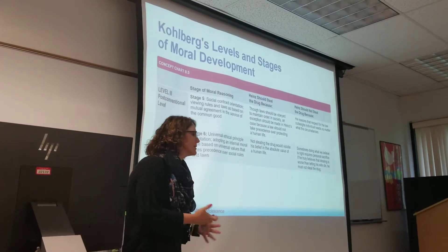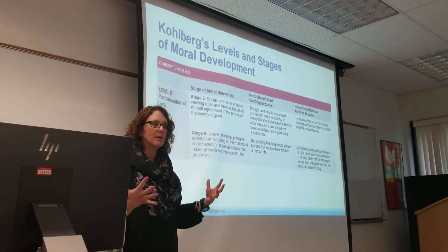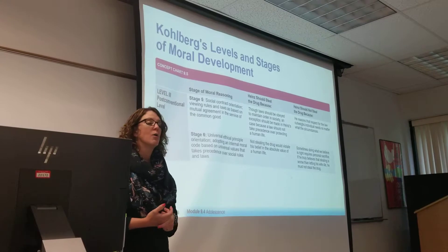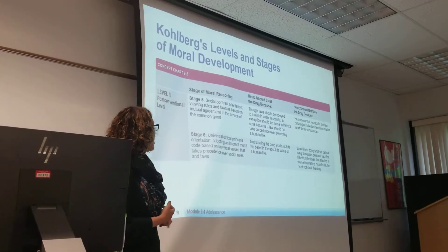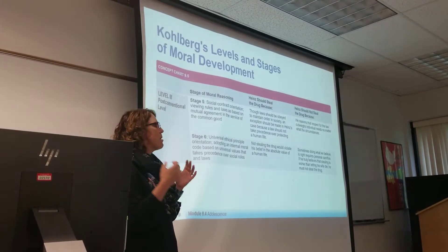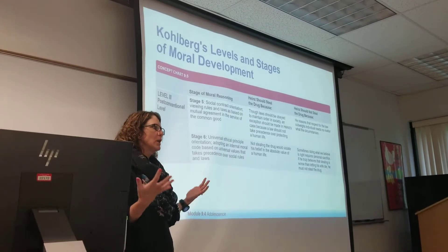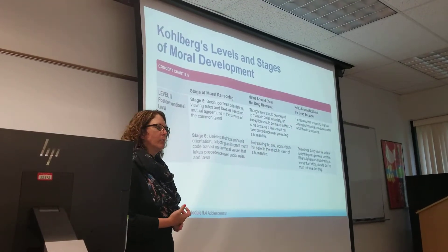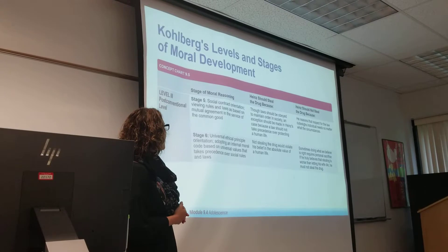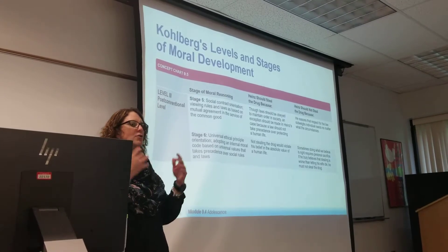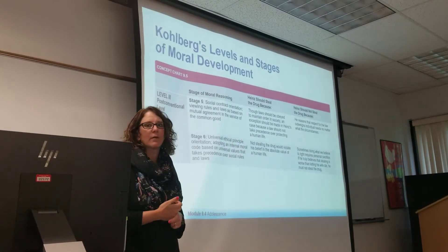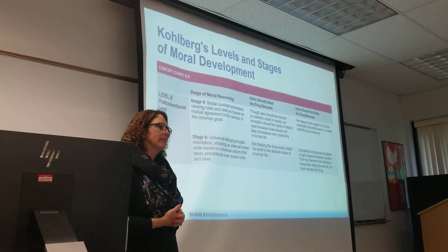For example, people who get arrested while protesting a social policy they object to. At the very highest level, you really only live according to your ethical principles — we're talking about people like Mother Teresa and Gandhi, who gave their whole lives to living by their principles. Kohlberg used the example of whether a man should steal a drug that would save his wife's life to illustrate the different stages of the theory.